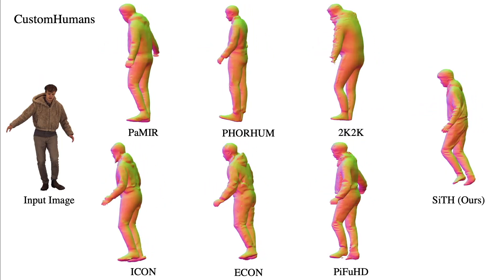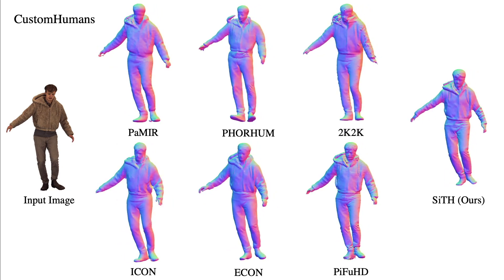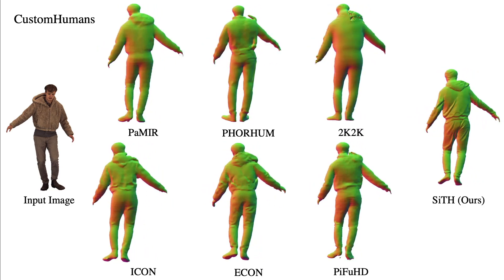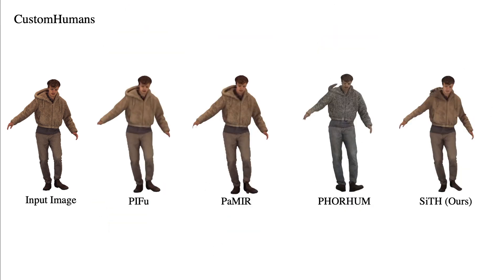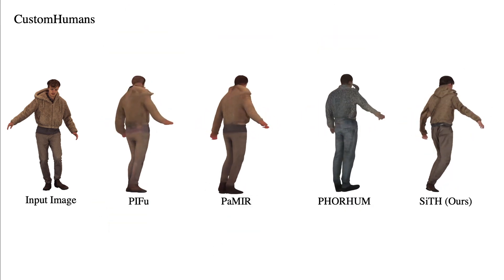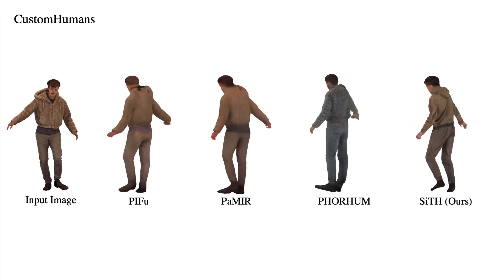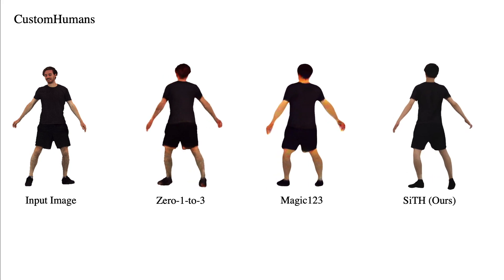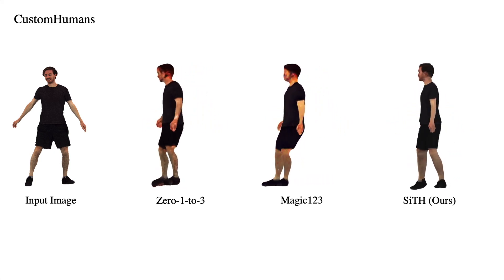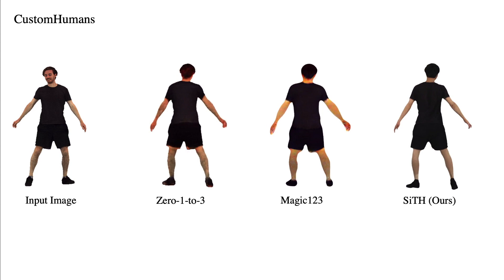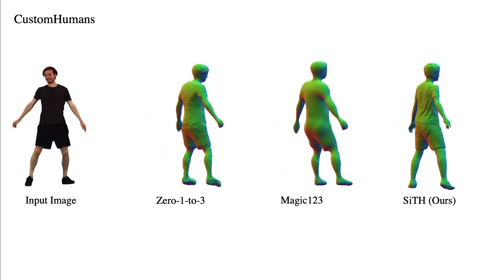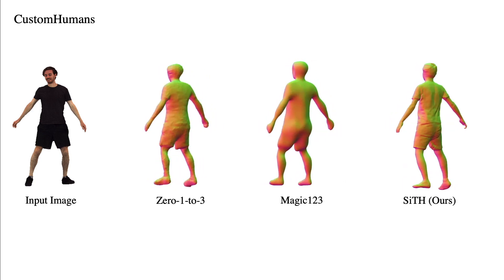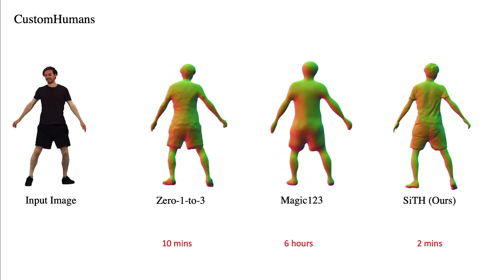When reconstructing a coat, our method generates geometric details such as wrinkles and a hood, outperforming others that tend to produce smoother surfaces. Our back-view textures maintain perceptual consistency with the input images. We also compare with optimization-based methods that use pre-trained diffusion models. While these methods are capable of hallucinating appearances, they often struggle with inferring the underlying geometric details. Notably, these methods require extensive optimization times, whereas our approach can generate a high-quality mesh in approximately two minutes.